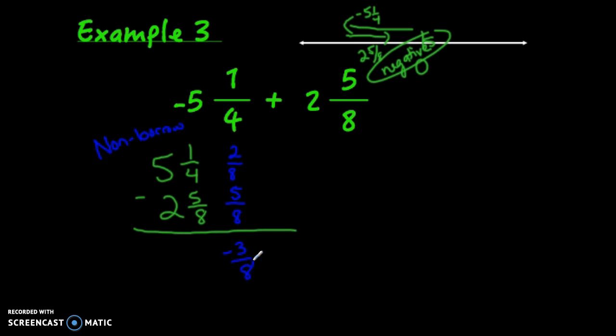5 minus 2 equals 3. So our problem looks like 3 and negative 3/8. Well, 3/8 less than 3 is 2 and 5/8. But remember, we're not in the positives; we're in the negatives. So the answer is negative 2 and 5/8. That's the non-traditional way.